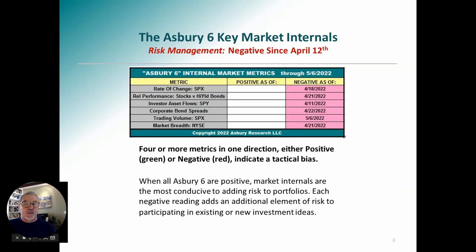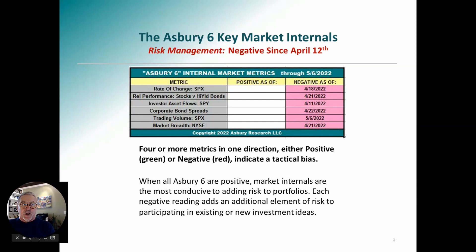Here's what the Asbury 6 dashboard looks like — we update this every day in our research center, the paid part of our website, a couple of hours after the close. Right now they're all red, meaning negative. These are the dates each individual constituent most recently turned negative. Four or more in one direction indicates a directional signal. We would need four of these to turn back to green to give us a positive signal and tell us it's time to reallocate the capital we took out of the market on April 12th.